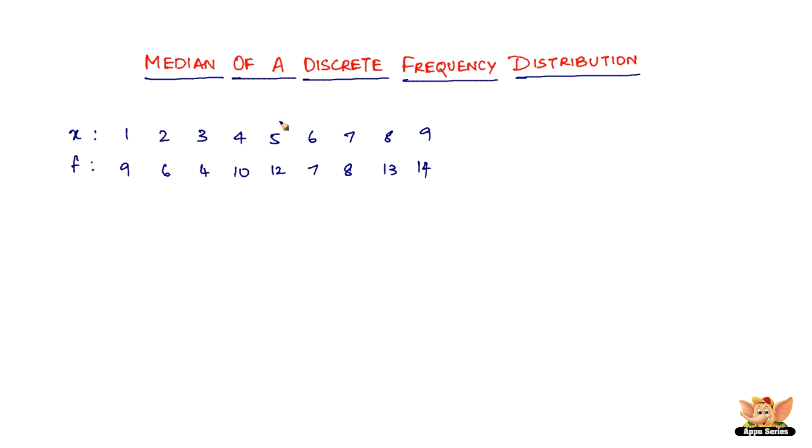What we have to do is find something called a cumulative frequency. Cumulative frequency is where we take the first frequency and write it as is, then from the second one onwards, we add the previous cumulative frequency.